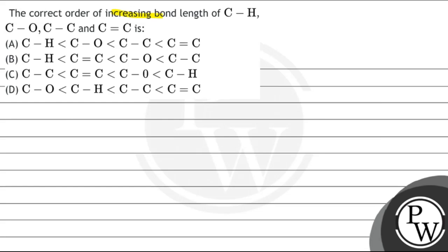The question asks for the correct order of increasing bond length of CH, CO, CC single bond, and CC double bond. Option A is CC double bond greater than CC single bond greater than CO bond greater than CH bond. Option B is CC single bond greater than CO single bond greater than CC double bond greater than CH single bond. Option C is CC single bond greater than CO single bond greater than CC double bond greater than CC single bond. Option D is CC double bond greater than CC single bond greater than CH single bond greater than CC single bond.